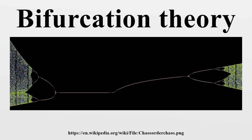Global bifurcations occur when larger invariant sets, such as periodic orbits, collide with equilibria. This causes changes in the topology of the trajectories in the phase space which cannot be confined to a small neighborhood, as is the case with local bifurcations. In fact, the changes in topology extend out to an arbitrarily large distance. Examples of global bifurcations include: homoclinic bifurcation, in which a limit cycle collides with a saddle point; heteroclinic bifurcation, in which a limit cycle collides with two or more saddle points; infinite-period bifurcation, in which a stable node and saddle point simultaneously occur on a limit cycle; and blue-sky catastrophe, in which a limit cycle collides with a non-hyperbolic cycle. Global bifurcations can also involve more complicated sets such as chaotic attractors.